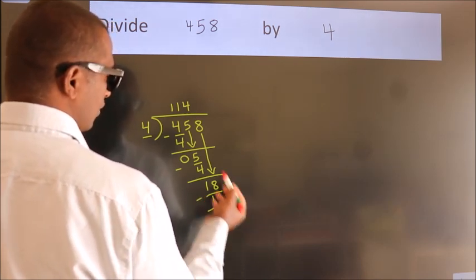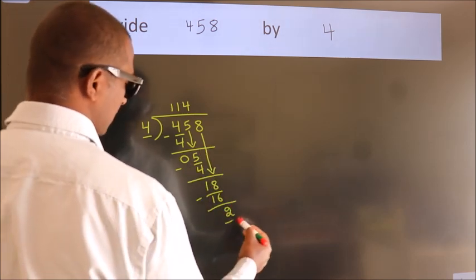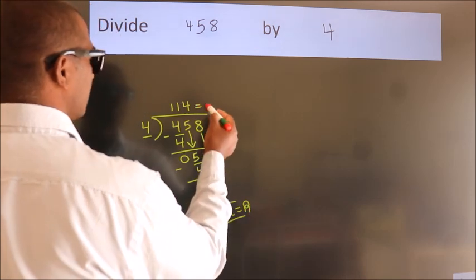After this, there are no more numbers to bring down, so we stop here. This is our remainder, and this is our quotient.